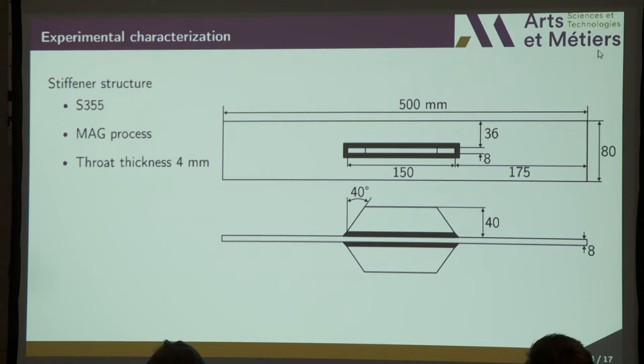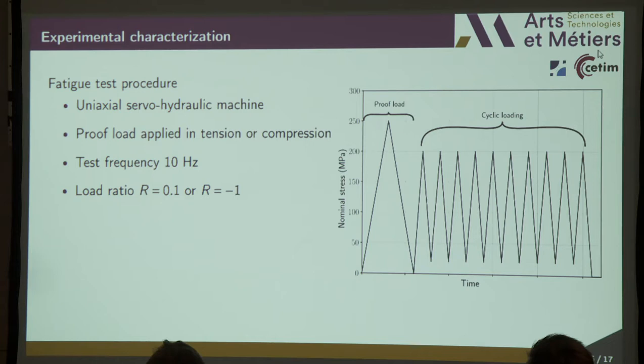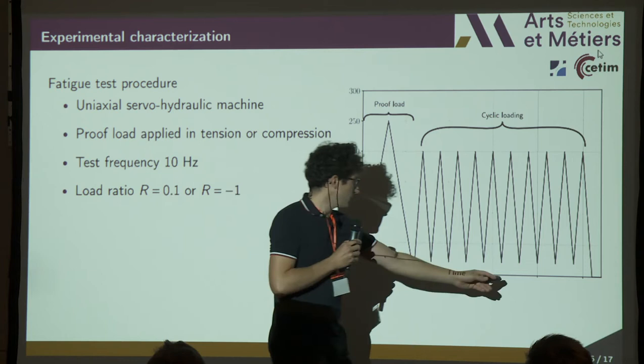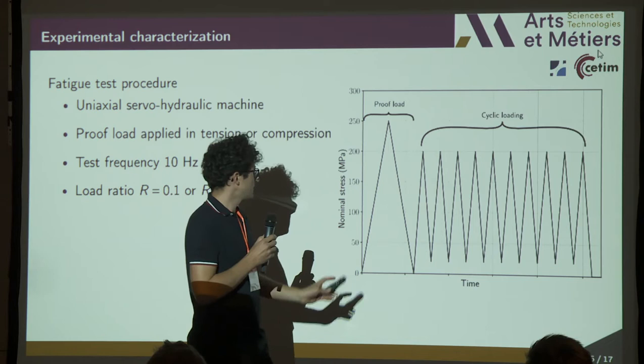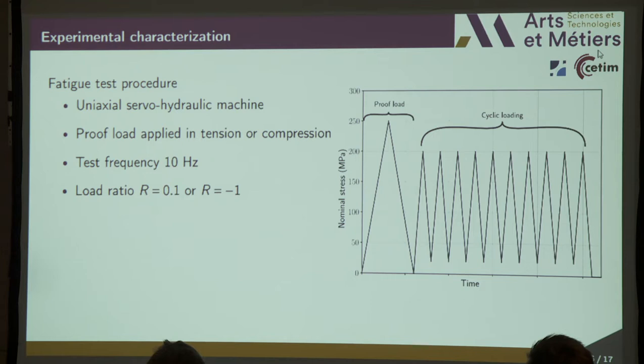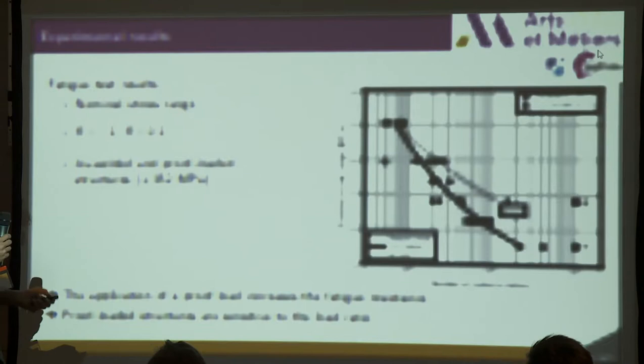About the fatigue testing procedure, we use a servo-hydraulic machine. On the figure on the right, I give the typical loading path we use. We have the nominal stress plotted against time. For proof-loaded structures, we apply an initial proof load, then come back to zero, and then apply a cyclic loading. The test frequency for cyclic loading is 10 Hz and we consider two stress ratios: R = 0.1 or R = -1.